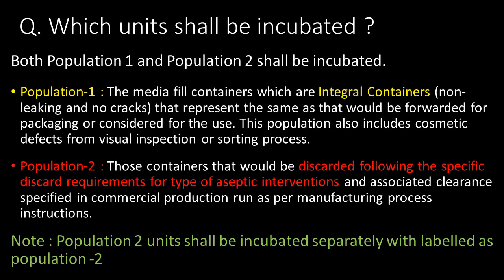This is a very commonly asked question: which units shall be incubated? Both population one and population two units shall be incubated. Population one units are the integral containers that represent the same as those forwarded for packaging or considered for use; this population also includes cosmetic defects from visual inspection or sorting. Population two are containers that would be discarded following specific discard requirements for types of aseptic interventions specified in commercial production run.